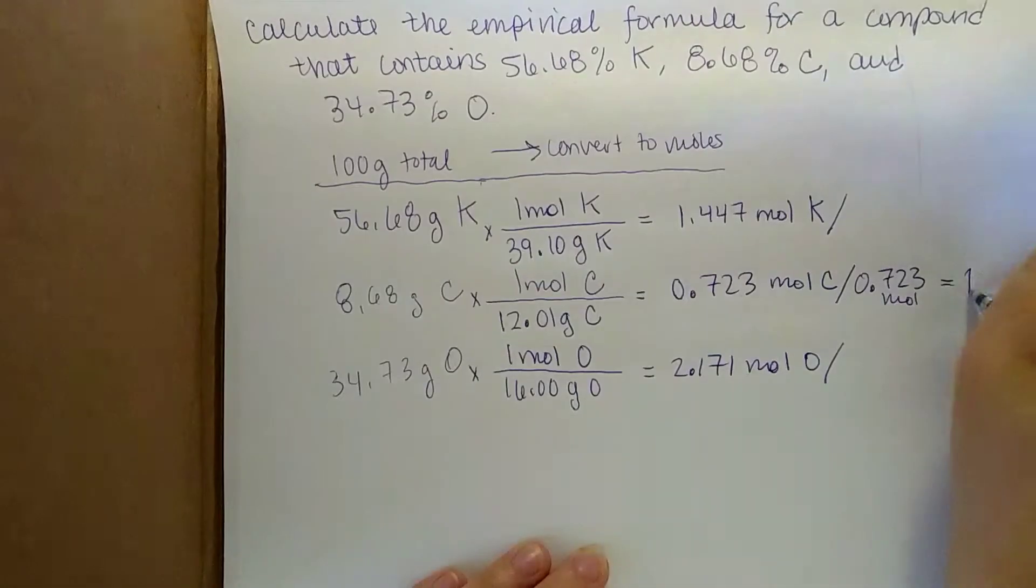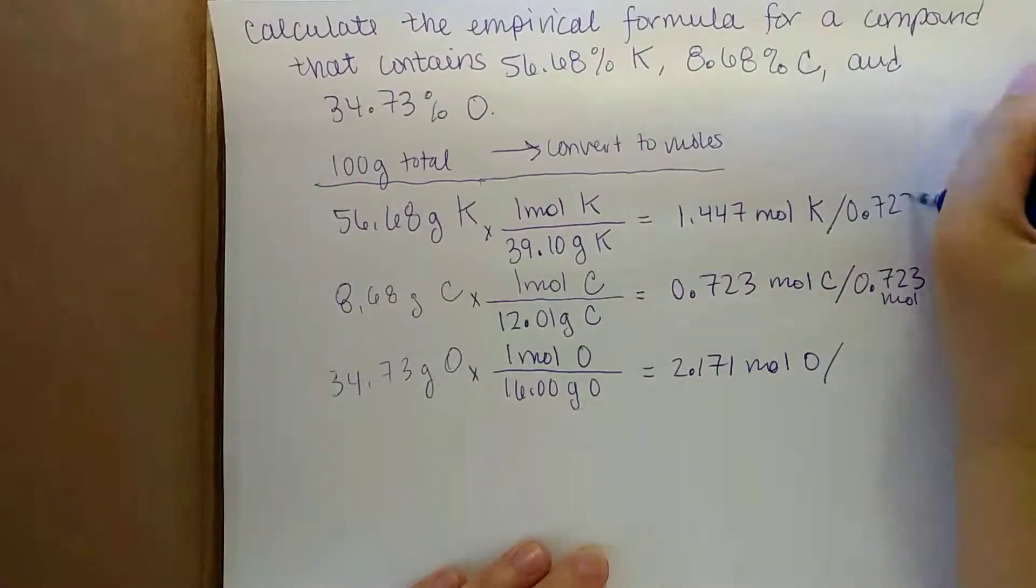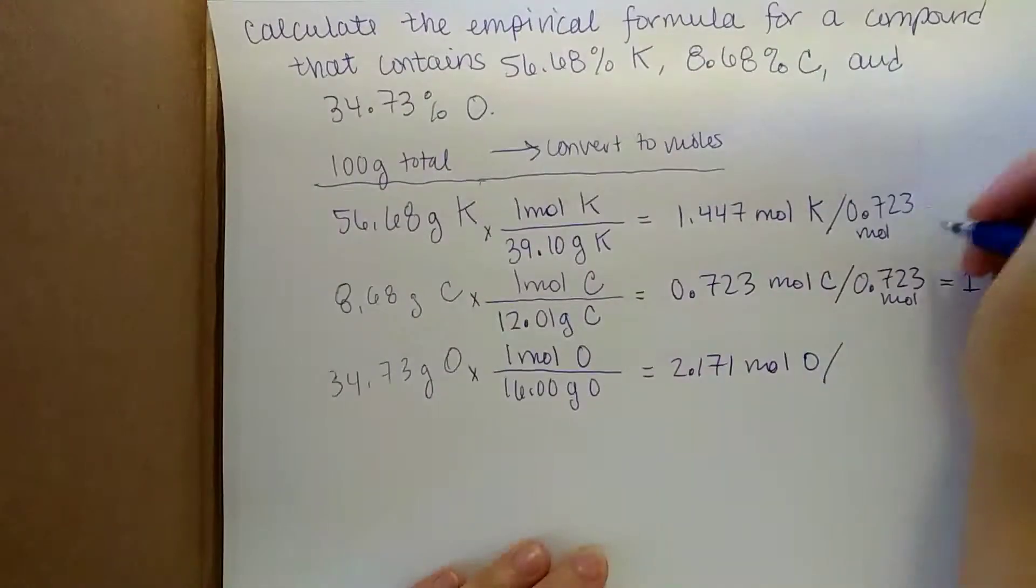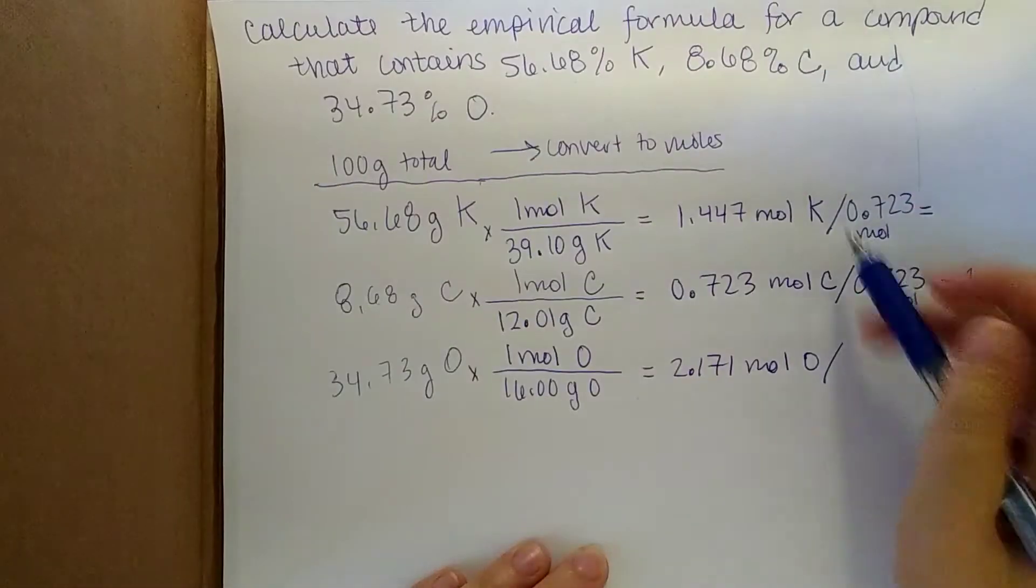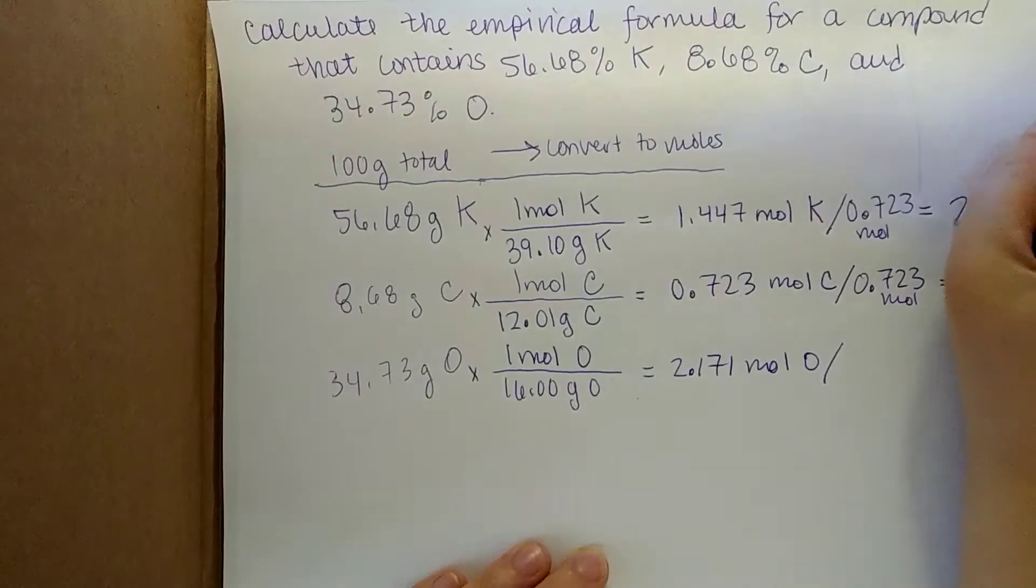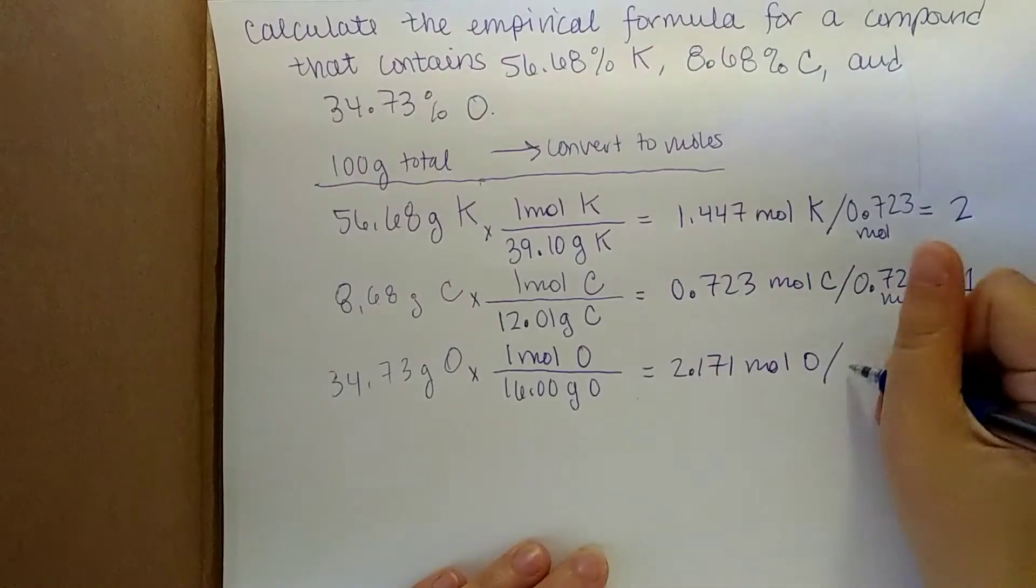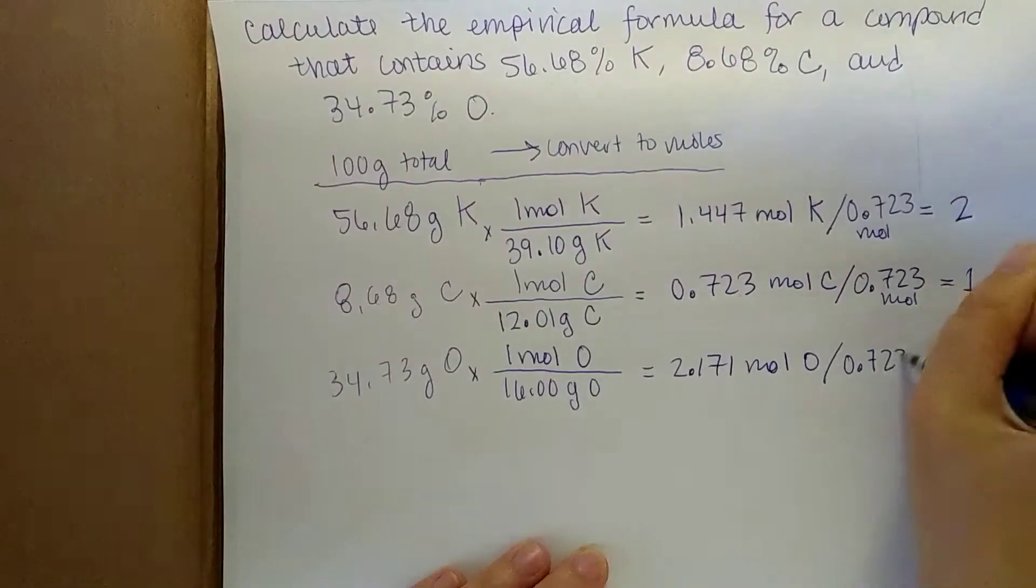So this, of course, gives one. If we divide this by 0.723 moles, we end up with two. You can see this is about double that. And then for here, it works out to be around three.